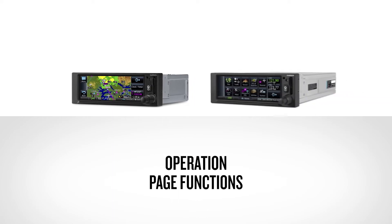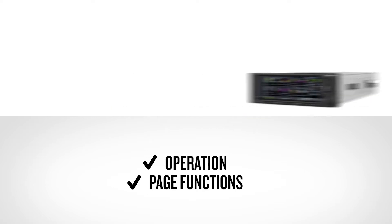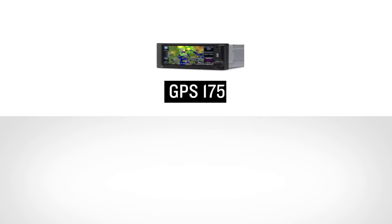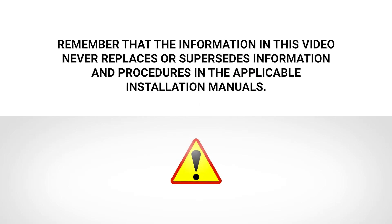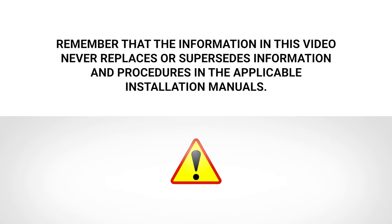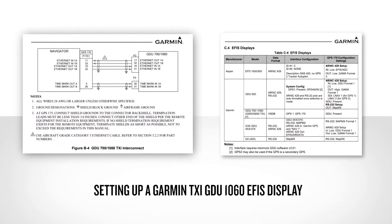Now that we have a better understanding of the operation and different page functions available on the navigator, we will demonstrate a few examples of the setup process with some common Garmin and third-party interfaces. We will use the GPS-175 navigator for our demonstration. Due to the different interface options with each of the navigators, not all examples may be applicable to every installation. As always, refer to the proper installation manual for the appropriate navigator and interfacing equipment.